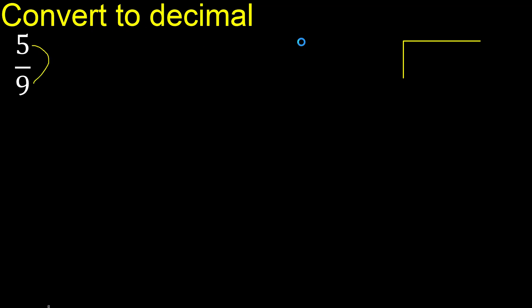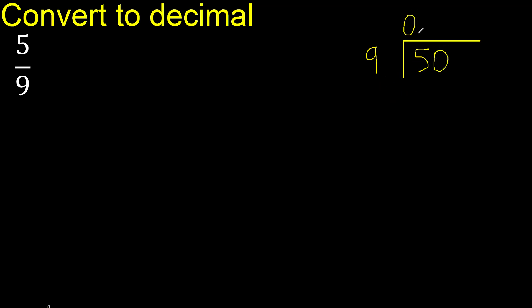5 divided by 9. 5 is less, therefore complete — always complete with 0. Here: 0 point.